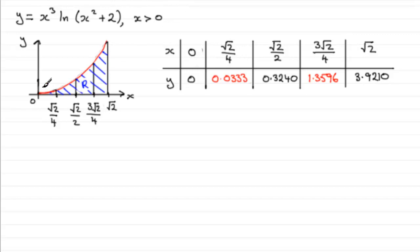And we've got a sketch of the curve here that's given and we have a shaded region R that is bounded by the curve, the x axis and the line x equals root 2.